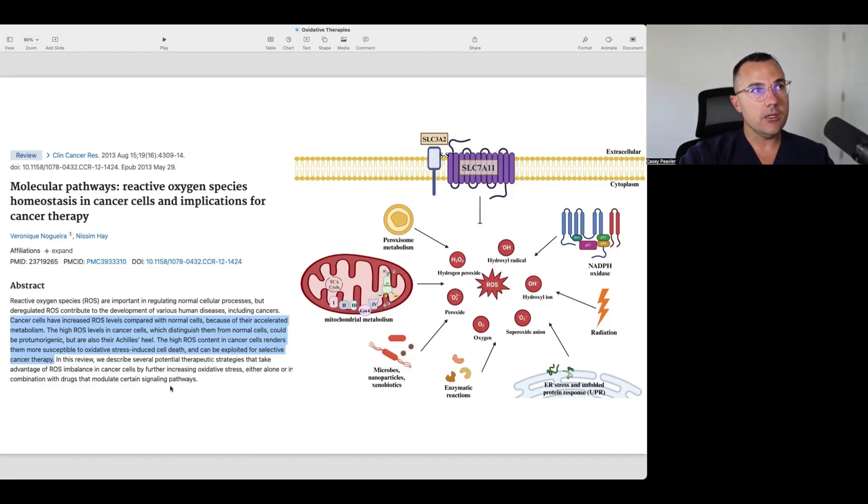This paper was published in August 2013, titled molecular pathways, reactive oxygen species, homeostasis, and cancer cells and implications for cancer therapy. It says cancer cells have increased ROS levels compared to normal cells because of their accelerated metabolism. The high ROS levels in cancer cells, which distinguishes them from normal cells, could be pro-tumorigenic, but also their Achilles heel.